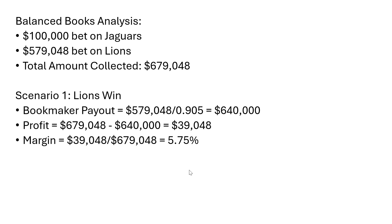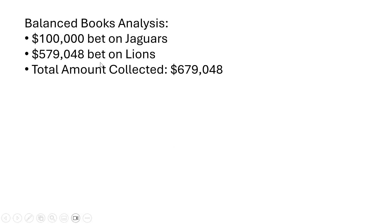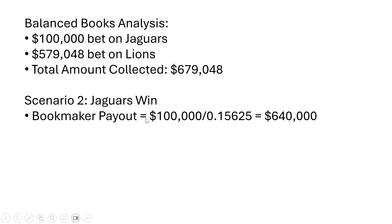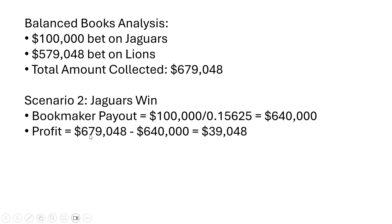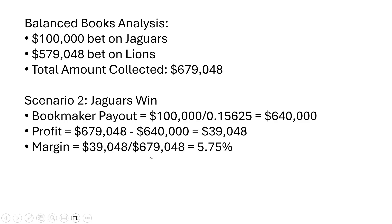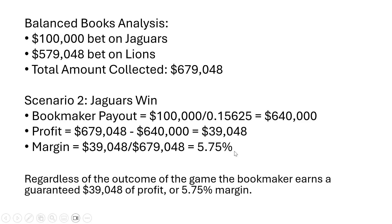Let's now consider scenario two: what happens if the Jaguars were to win this game? Same scenario — $100,000 bet on Jaguars, $579,000 bet on Lions, same total amount collected — but this time the Jaguars win. The bookmaker's payout: we take the $100,000 of bets collected on the Jaguars and divide by the implied probability of the Jaguars winning, so the bookmaker would pay out these winning bettors a total of $640,000. The amount collected by the bookmaker minus the payout once again leaves $39,048. The margin once again is 5.75%. So regardless of the outcome of the game, with balanced books, the bookmaker earns a guaranteed $39,048 of profit for this 5.75% return or margin.